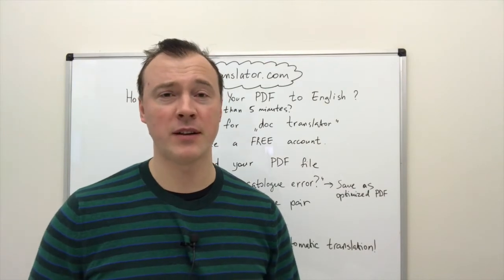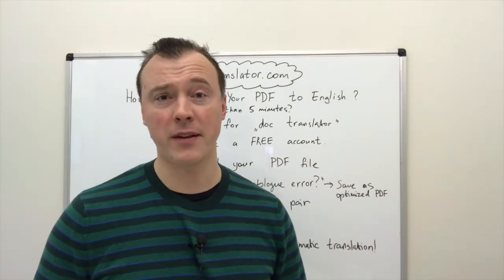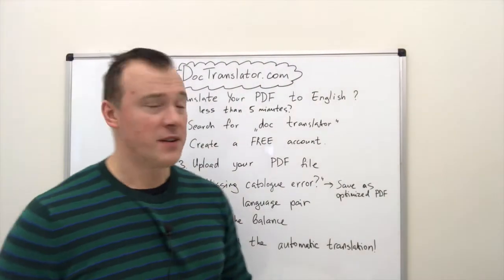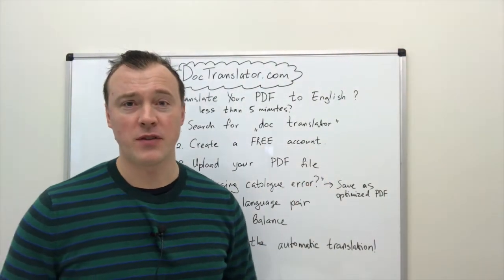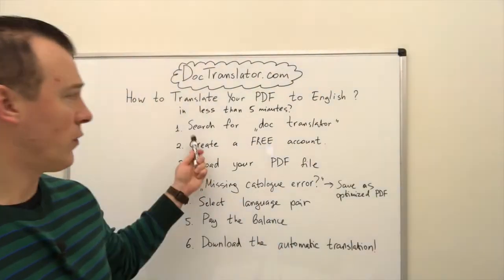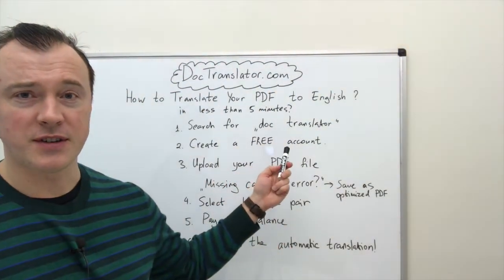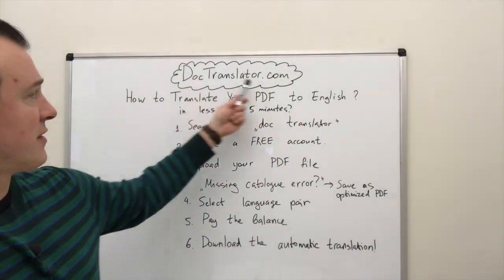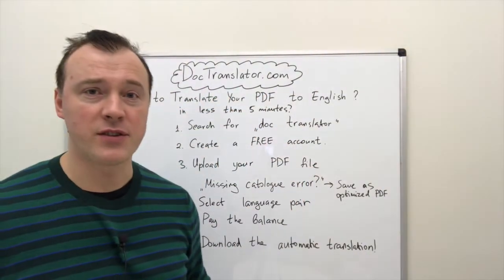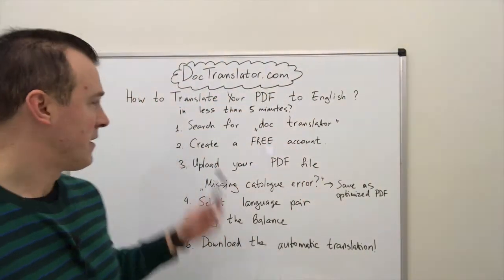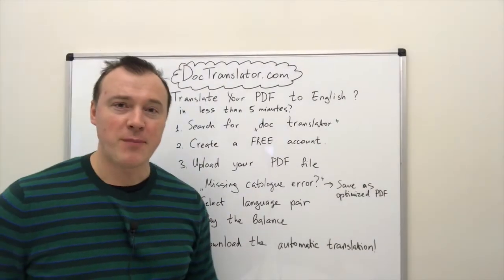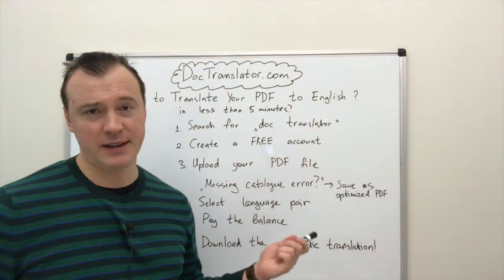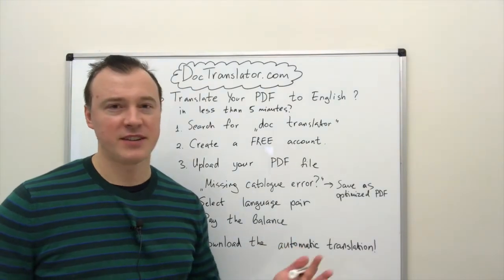In this step-by-step tutorial I will guide you through all the steps required to get your PDF file translated automatically. Step number one: you need to register. Go to Google and search for doc translator, and once you find doctranslator.com, click on that search result. Step number two: you need to create a free account — yes, account creation is free, there's absolutely nothing you need to pay.